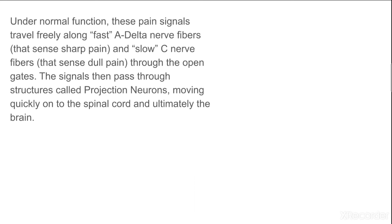Under normal function, pain signals travel freely along the fast A-delta fibers — which sense sharp pain — and slow C-fibers — which sense dull pain — through the open gates. The signals then pass through structures called projection neurons, moving quickly onto the spinal cord and ultimately the brain. This is a scenario showing the normal case where pain signals are traveling freely through the pain nerve fibers, passing through the open gates and then through the projection neuron to the brain.